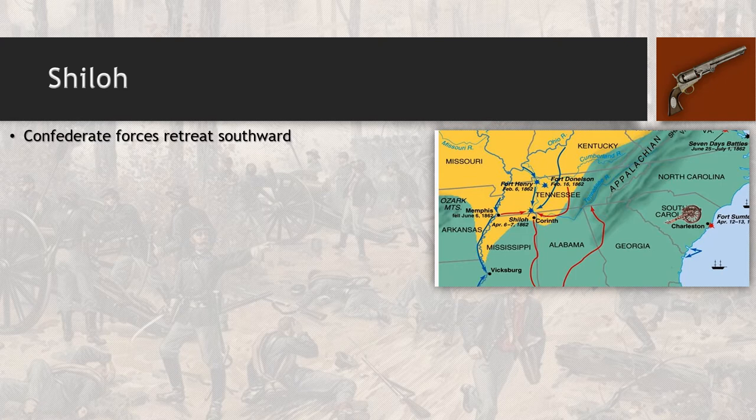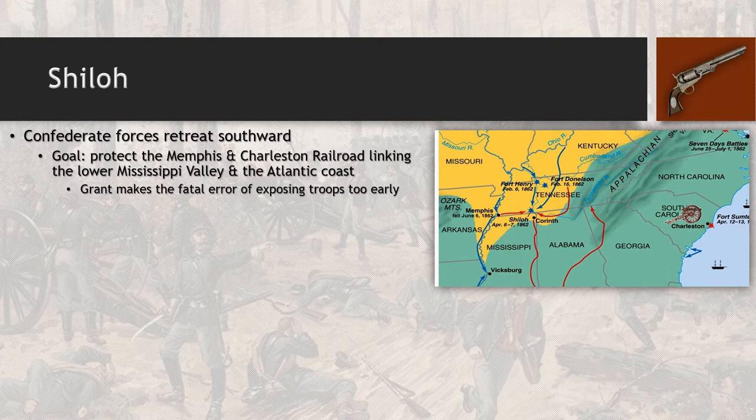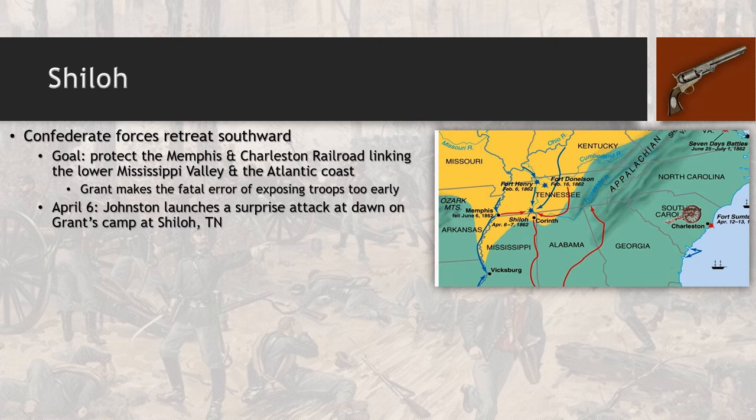Confederate forces retreat from Fort Henry and Fort Donelson, with their goal being to protect the Memphis and Charleston Railroad, which links the lower Mississippi Valley and the Atlantic Coast. Grant decides to give chase — perhaps a little too aggressively — and ends up exposing his troops to the Confederacy too early. On April 6th, Albert Sidney Johnston launches a surprise attack at dawn on Grant's camp at Shiloh in Tennessee.